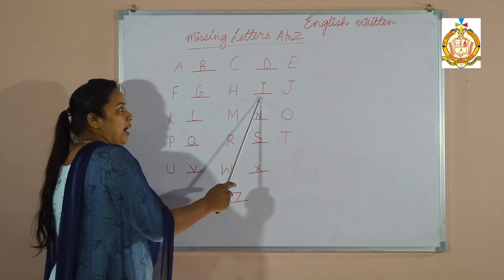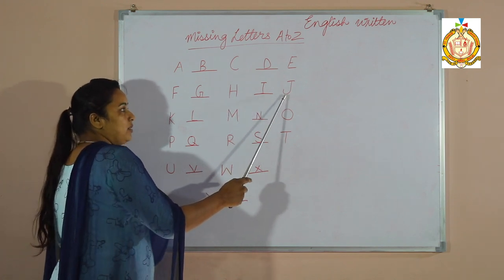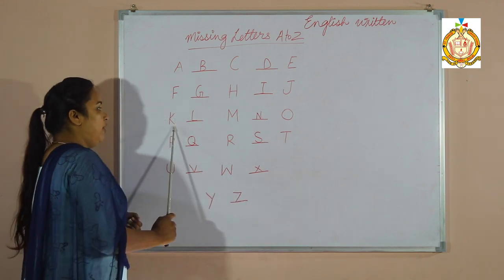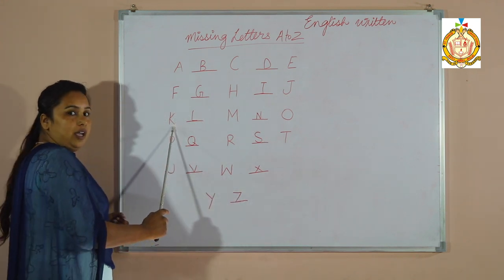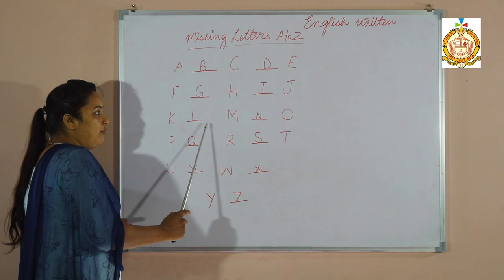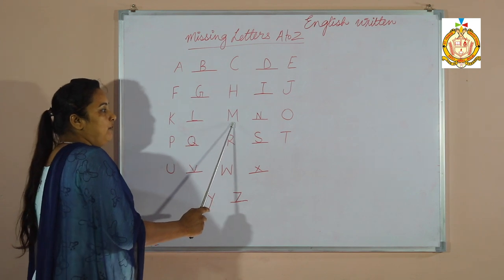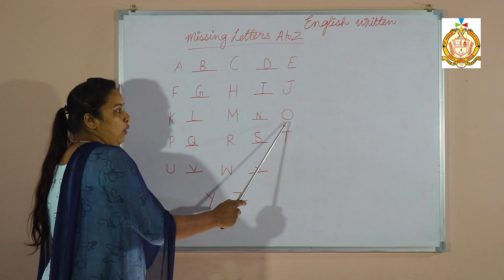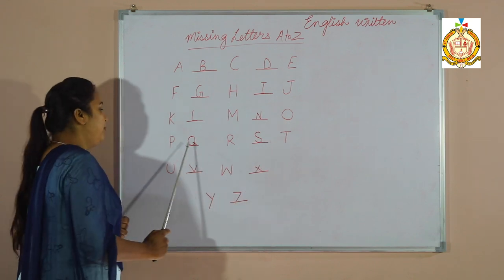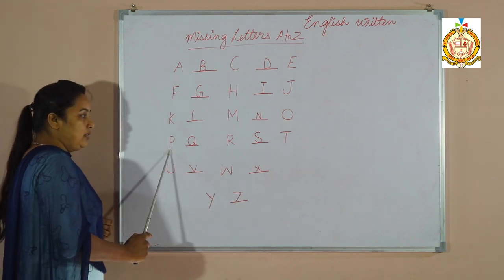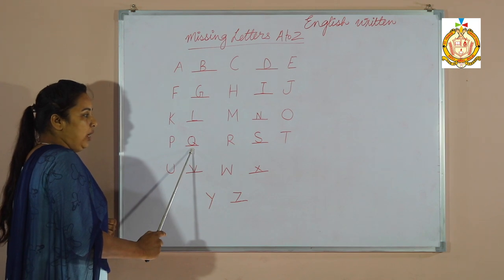I for Ice Cream. J for Joker. K for King. L for Leaf. M for Moon. N for Nest. O for Owl. P for Parrot. Q for Queen.